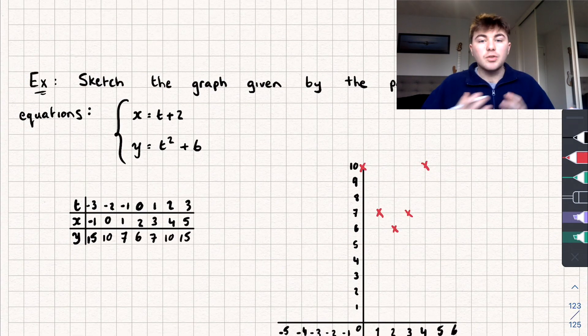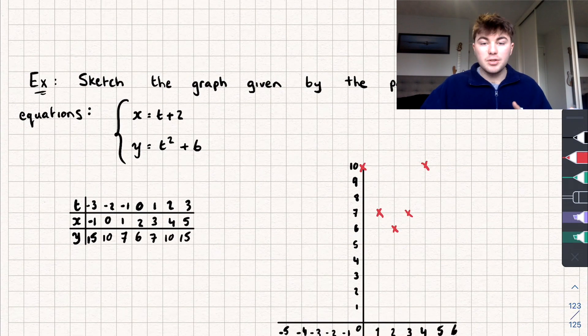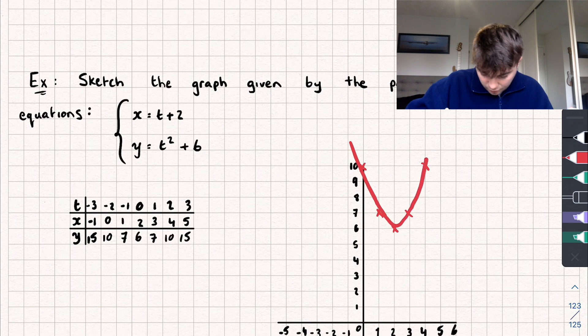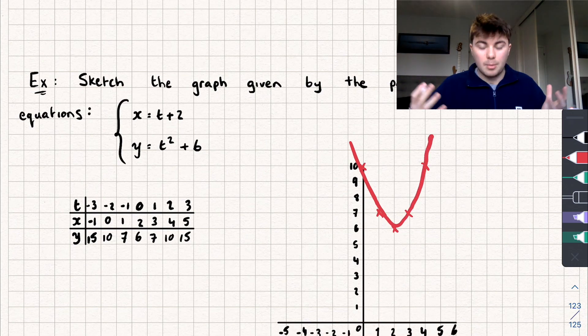So I've completed the table and plotted a few of the points on my graph. You can see that these parametric equations were describing a quadratic curve or a parabola, and I can connect them like this.